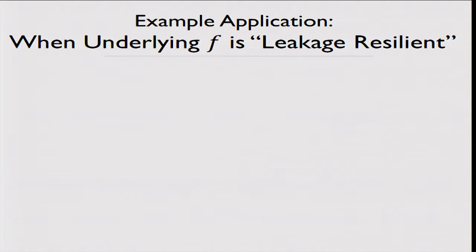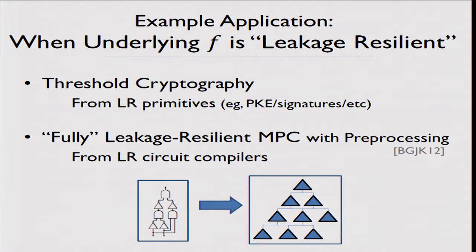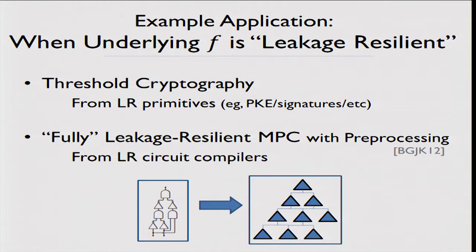One example where this is useful is when the underlying functionality has some leakage resilience built in itself. The guarantee we provide is that partial information of the inputs may be revealed, but not the whole input. So if the inputs held by parties are secret keys of some underlying primitive that is leakage-resilient to some bounded amount, this is fine. There is also additional work where we achieve MPC with full leakage resilience — where no information is revealed about the inputs — by combining the present work with leakage-resilient circuit compilers.